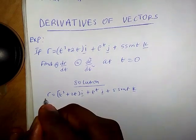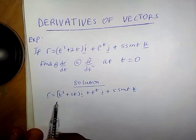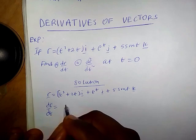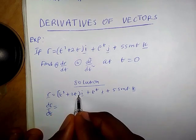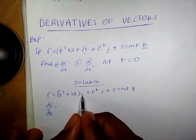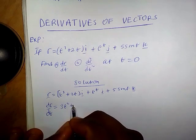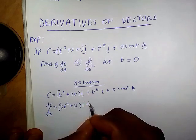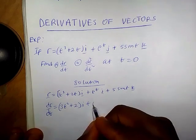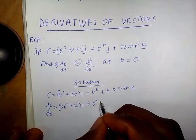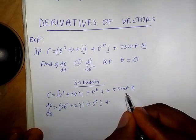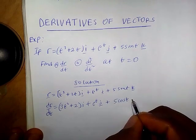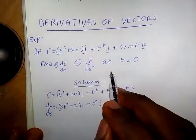Now we differentiate our position vector with respect to time t. So we have dr/dt: for the i component we differentiate to get 3t² + 2 times i. When we differentiate the exponential we have e^t, it doesn't change. When we differentiate the k component we have 5cos(t) k.